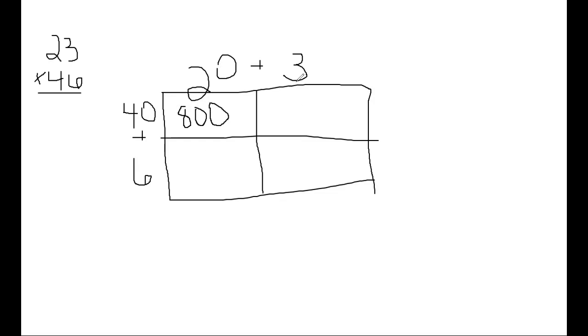And then for this box, I bring my three down and my 40 across. So I have 40 times three. I take my four times three, my basic fact, which is 12, and then I have one zero. So I need to add one zero to the end. So I have 120.